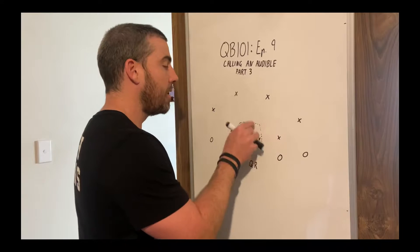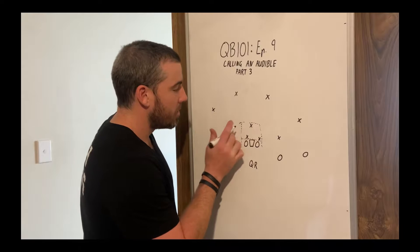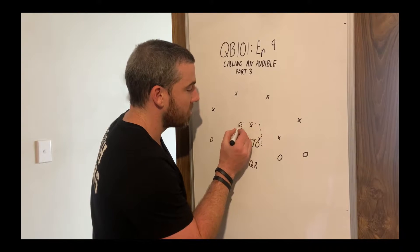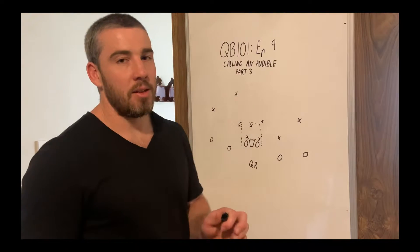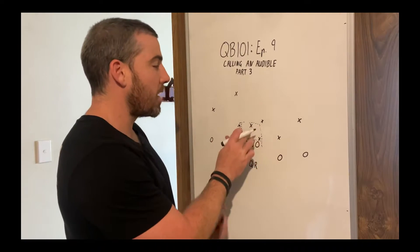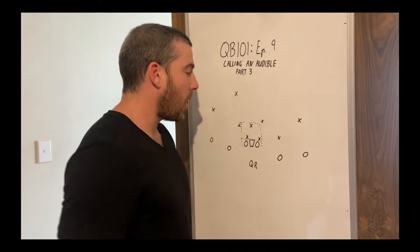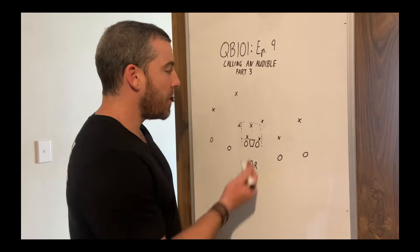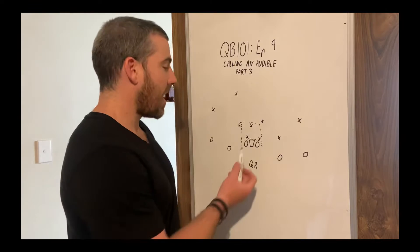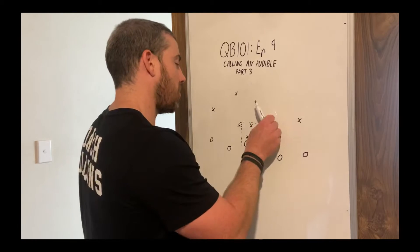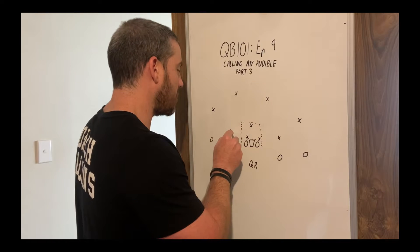Anytime you see three defenders in the box and no one, now sometimes you might have someone just outside the box. You know what I mean? You might have this safety just here. This is a little bit different now. So, yes, we only have three in the box, but these guys are only three or four steps away from being in the tackle box. I mean, in one second, they could have five people in the box and then we're in trouble.